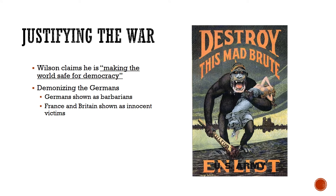Now that they've entered the war, the United States has to justify it. The war is very unpopular, so Woodrow Wilson does everything he can to explain why it's a good idea. The reason he gives is that he's making the world safe for democracy. He says France and Britain are both democracies, while Germany and Austria-Hungary are both monarchies — though this is not totally true, as Germany and Austria both had some democratic elements. Wilson says they're fighting to protect democracy from dictatorships and from Germany and Austria.